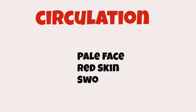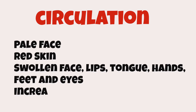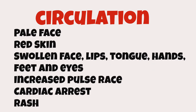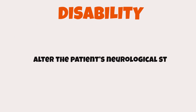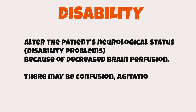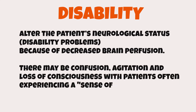C is for circulation, where the patient can actually experience a circulatory collapse due to a massive release of histamine leading to very low blood pressure. D is for disability, where the patient's neurological status can become quite impaired due to reduced brain perfusion. There may be signs of confusion, agitation, and also a sense of impending doom where the patient feels they will die.